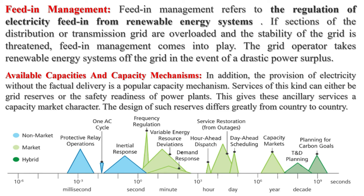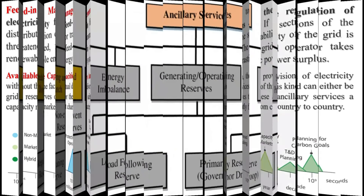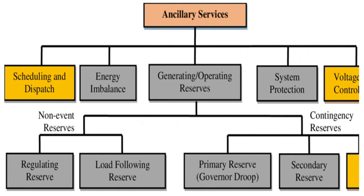A renewable system refers to an energy system that relies on energy sources that are naturally replenished on a human timescale. These include sunlight, solar energy, wind, the movement of water (hydroelectric power), and geothermal heat. Renewable energy systems are rapidly becoming more efficient and cheaper, and their share of total energy consumption is increasing. These concepts are all interconnected and play a crucial role in the transition towards a more sustainable and efficient energy system.